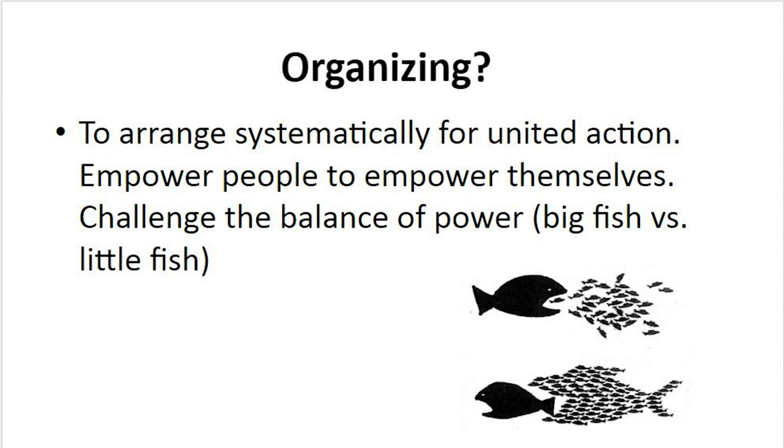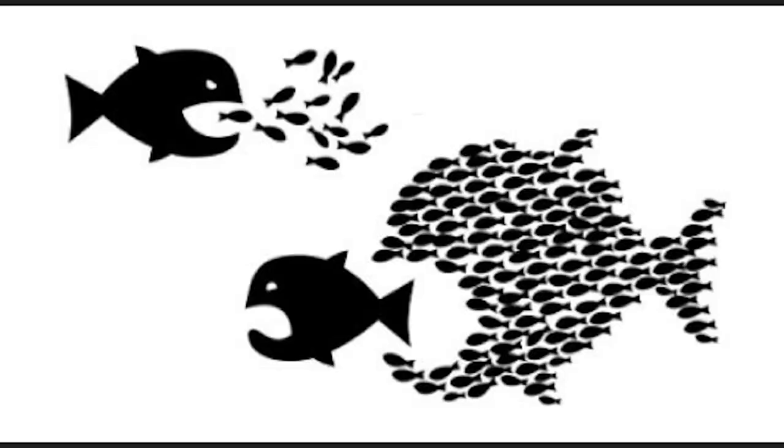The difference between activism and organizing is that organizing is to arrange systematically for united action, empower people to empower themselves, and challenge the balance of power. A lot of times when I give presentations, I always show the picture of the little fish and the big fish — that's challenging the balance of power. We have to really understand what society we live in. When you're challenging the balance of power, you are usually giving power back to the people so that some sort of change can happen that positively impacts the lives of others.